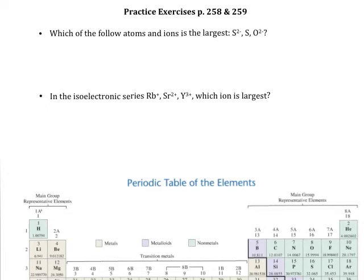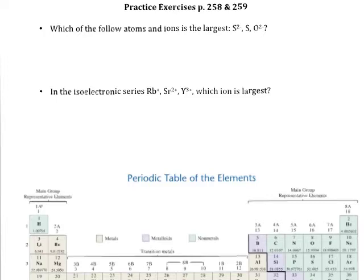We're looking at practice exercises from page 258 and 259 of the textbook. This time, instead of ranking atomic radii, we are ranking ionic radii, so the radii of ions. We're going to start these problems the same way we normally would. We want to find all of the atoms in the periodic table.